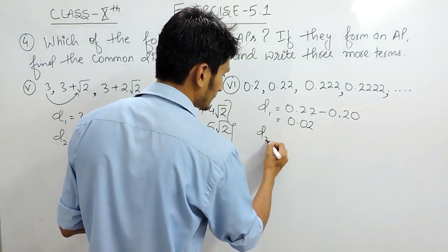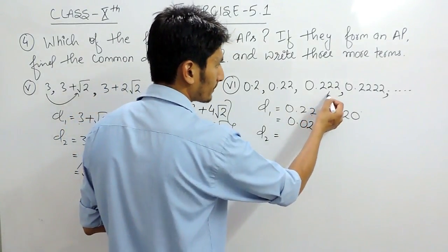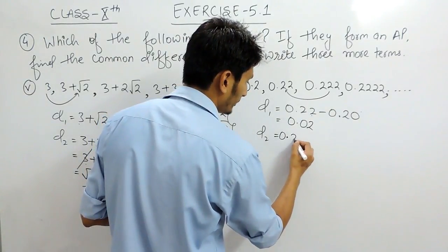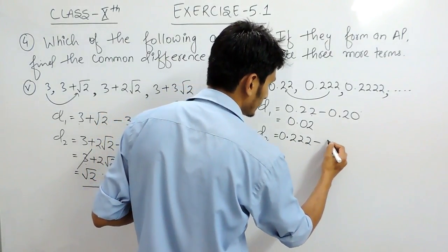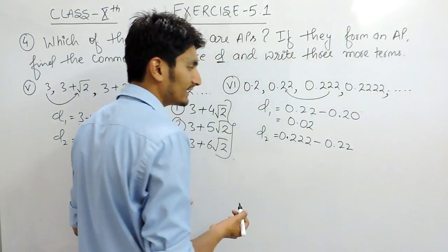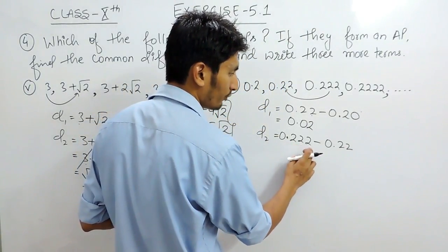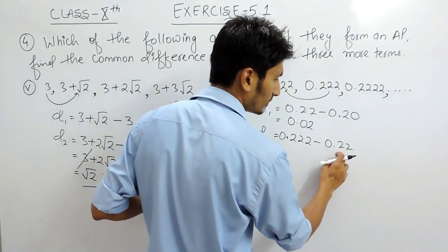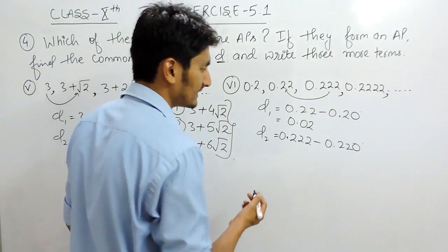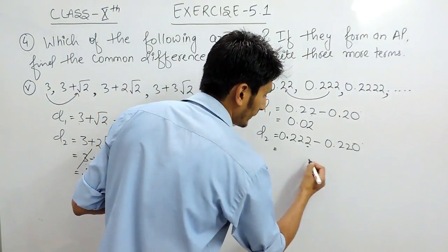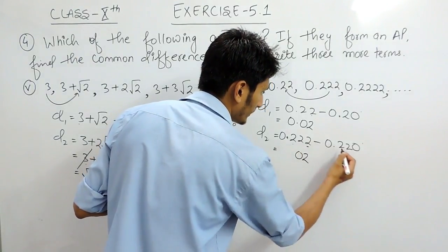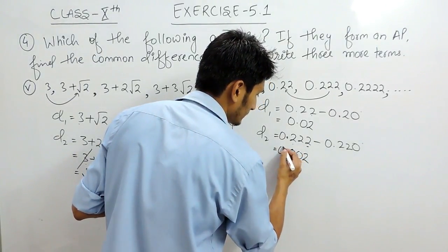To find the second common difference, I subtract 0.22 from 0.222. On the right-hand side of the decimal, 0.222 has 3 digits but 0.22 has only 2, so I add a zero to make it 0.220. Subtracting: 2 minus 0 is 2, 2 minus 2 is 0, 2 minus 2 is 0. So the second common difference is 0.002.